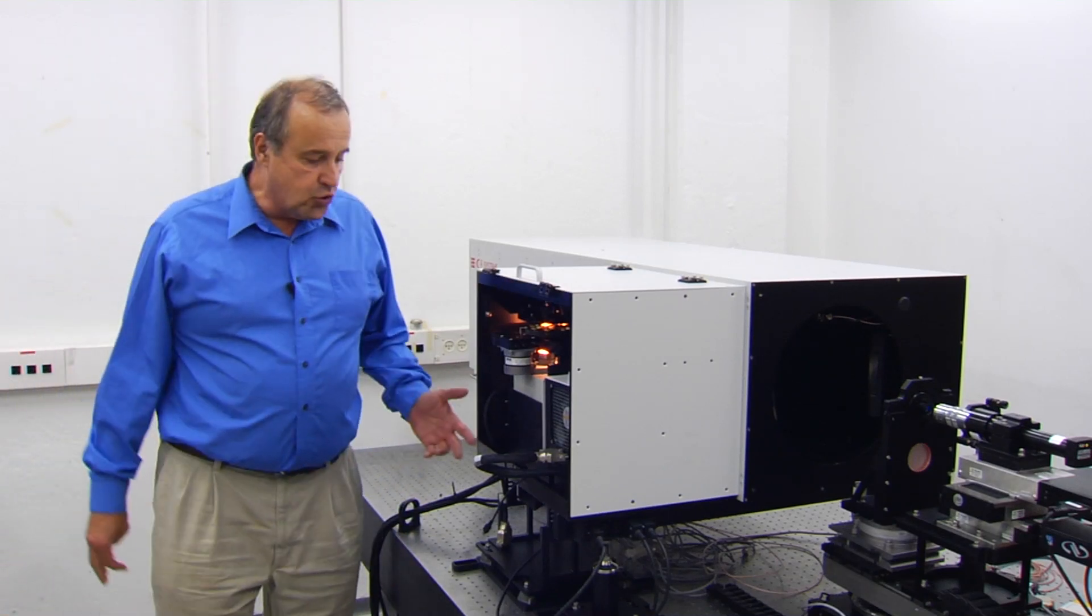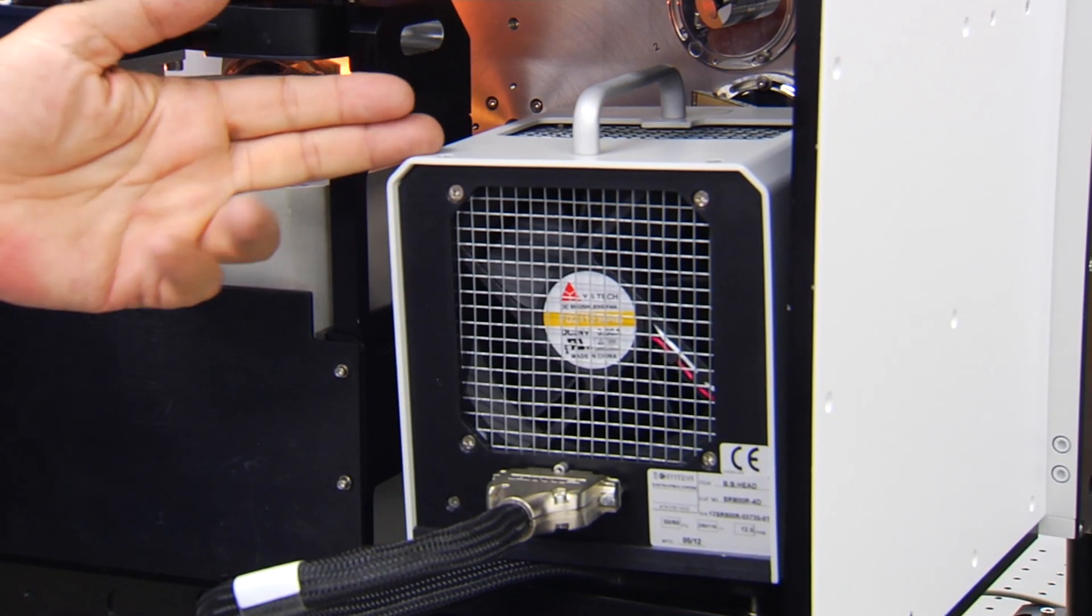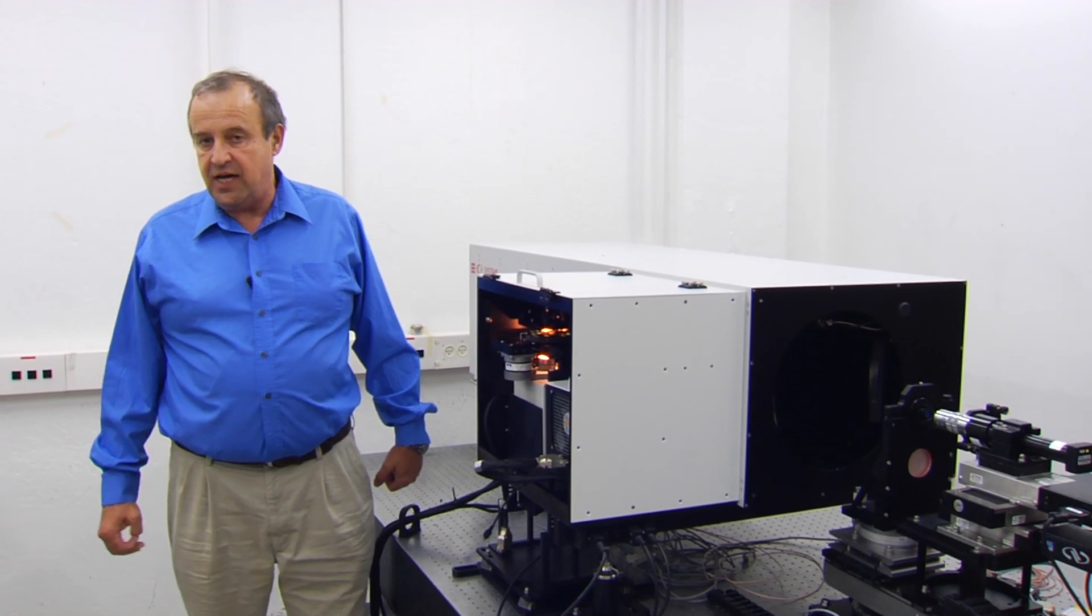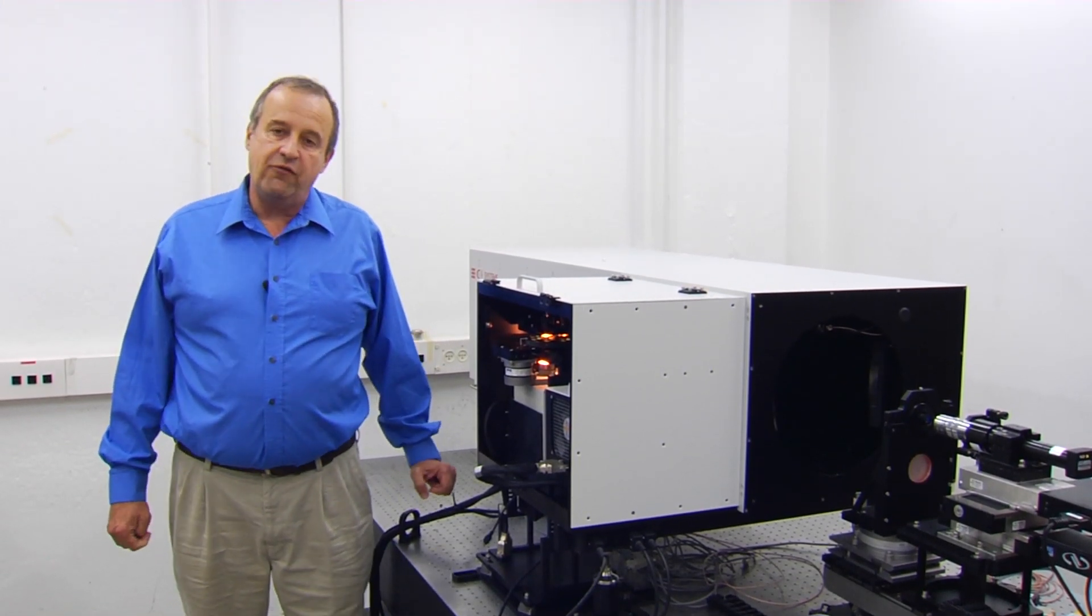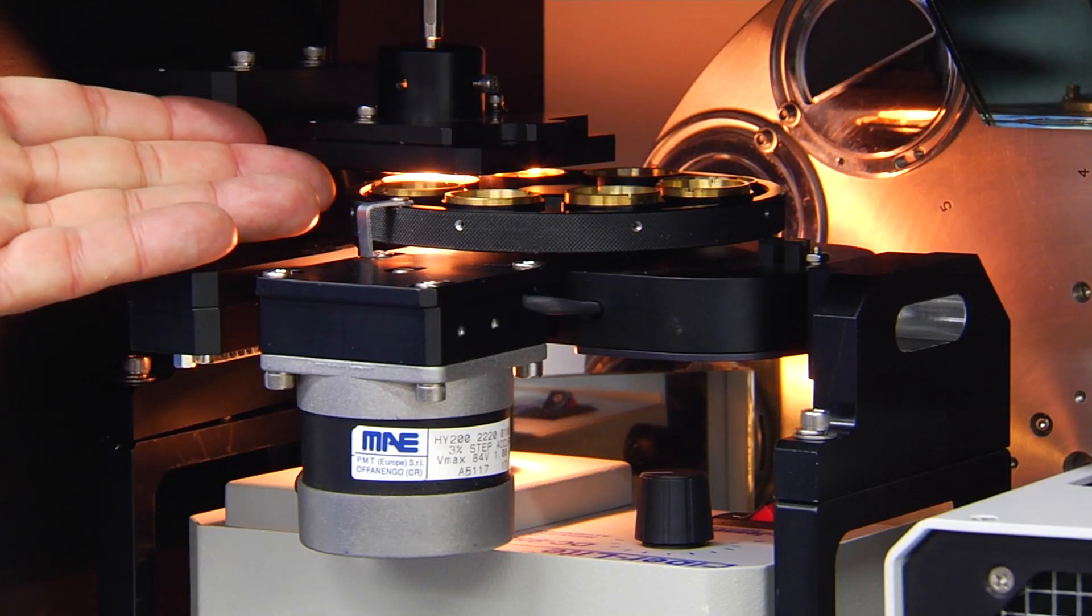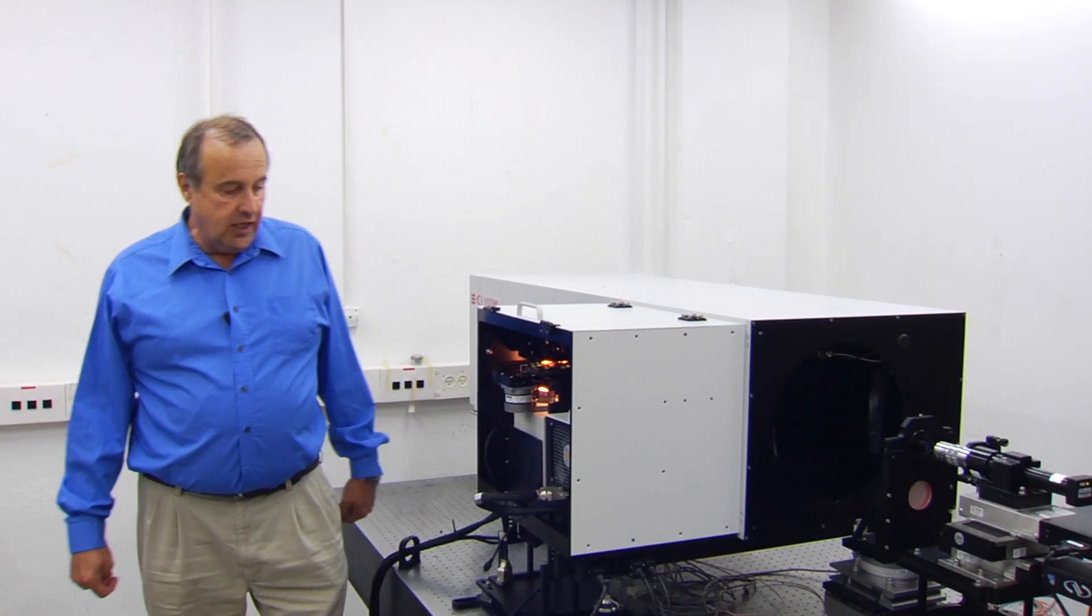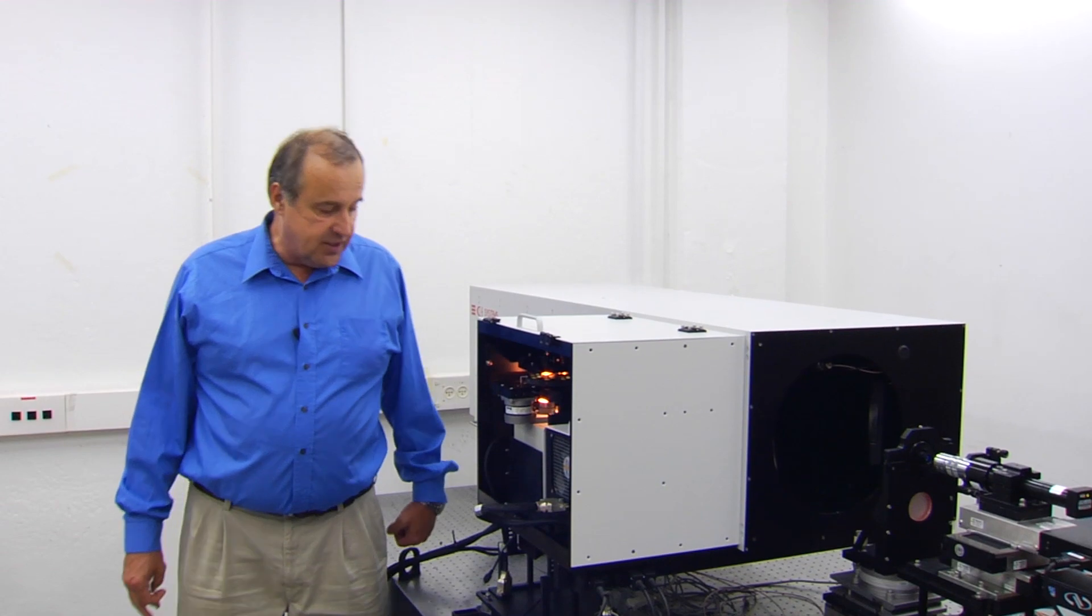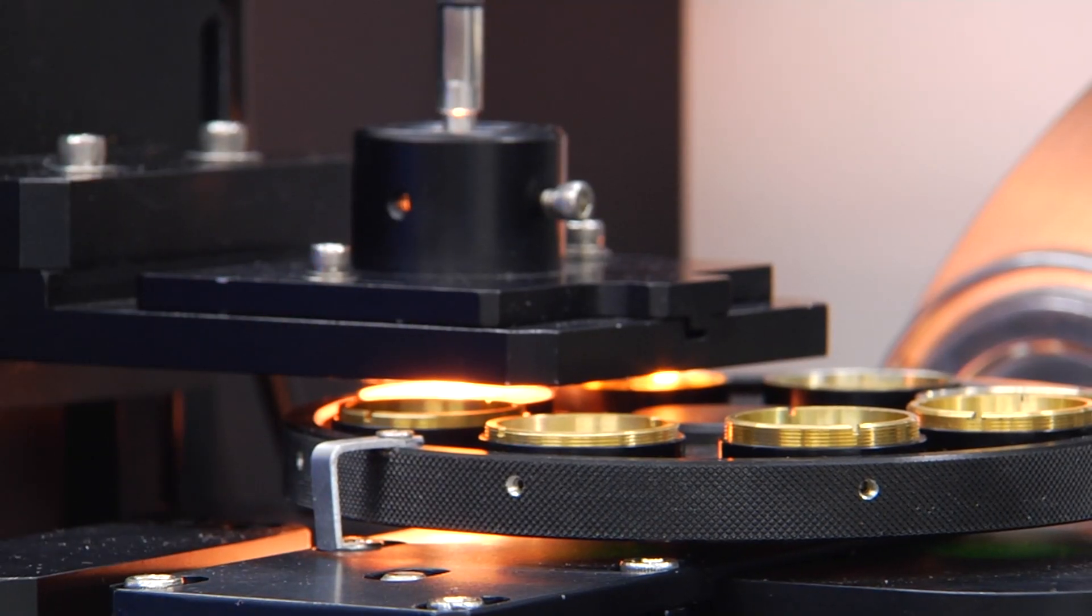In this system we are seeing here two sources. One source is the black body which is manufactured by CI Systems as one of its major products, as well as one visible source, including all types of filters and resolution targets as you can see here.